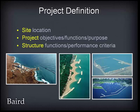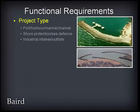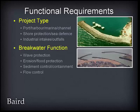In terms of project definition, the key inputs are the site location, project objectives, and the breakwater's functions and performance criteria. Functional requirements vary by project type — port, harbour, marine, channel, shore protection, sea defence, or industrial intakes and outfalls. The function of a breakwater can typically be described as providing wave protection, erosion or flood protection, sediment control and containment, or flow control. An important input is the cost versus risk trade-off, where increased capital cost generally results in reduced risk of damage, and one must consider implications such as reduced functionality, economic losses, cost of repair, and in some cases environmental impacts.